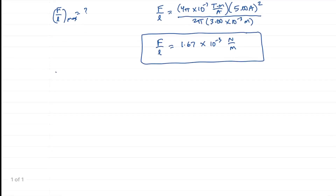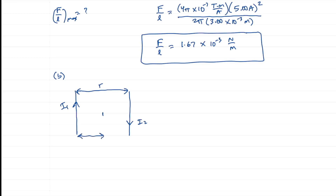For part b, the maximum force: what's happening is one wire is making a magnetic field at the other wire, and the current and magnetic field are making a force on that wire. We have current 1 here and current 2 here. The whole distance between them is r, so if we go to the midpoint, each wire is half the distance — r over 2 — from that midpoint.